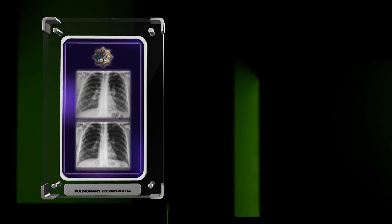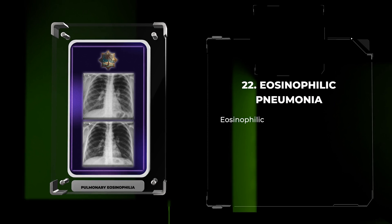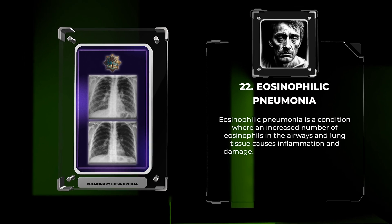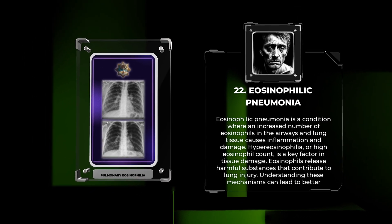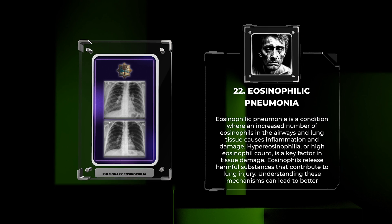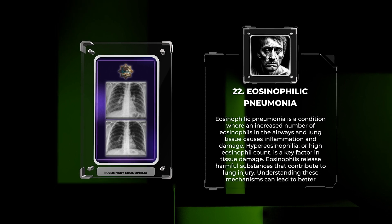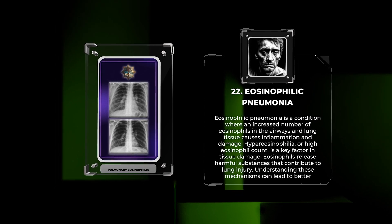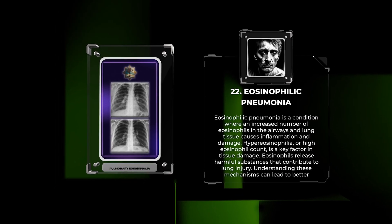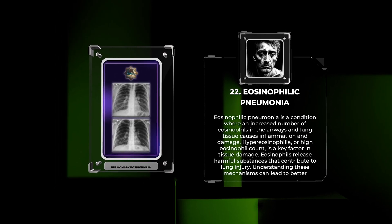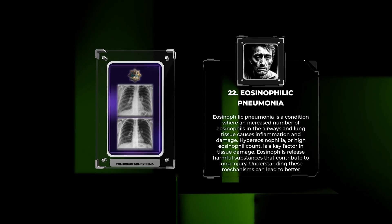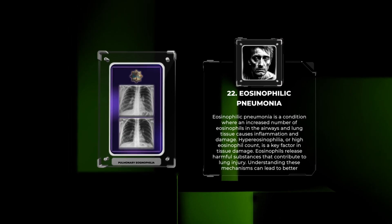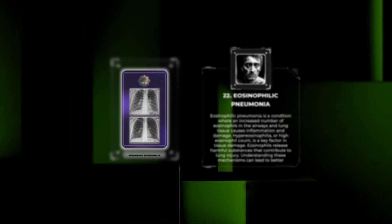Eosinophilic pneumonia is a condition where an increased number of eosinophils in the airways and lung tissue causes inflammation and damage. Hypereosinophilia, or high eosinophil count, is a key factor in tissue damage. Eosinophils release harmful substances that contribute to lung injury, and understanding these mechanisms can lead to better treatments.